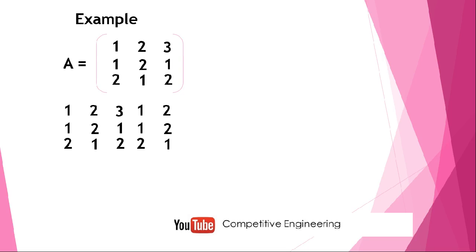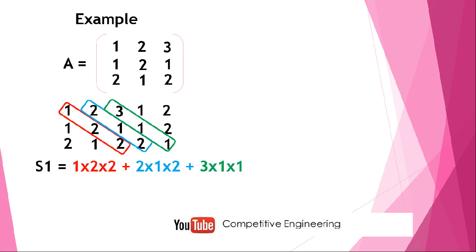Now we will mark the diagonals. The left diagonals which have at least three elements: this is the first diagonal, second diagonal, third diagonal. Now we will find the product of elements in each diagonal and add their sums. 1×2×2 plus 2×1×2 plus 3×1×1. That gives us 4 plus 4 plus 3, which equals 11. This is the first sum, denoted S1.